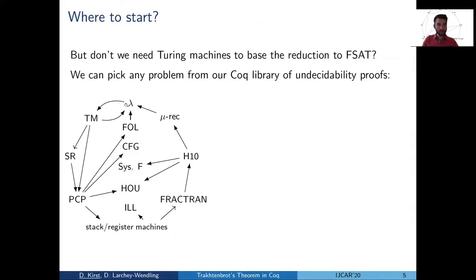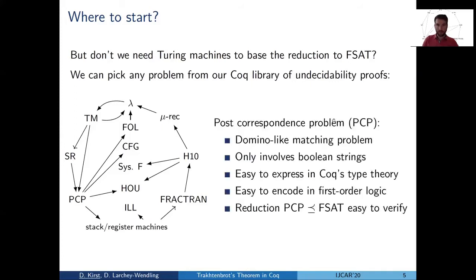A lot of undecidability proofs have been done already. Here's a graph, which is an overview of the problems we have considered. You can also see it in my background. Here we see, for instance, Turing machines, but we also see another problem, PCP. And this problem, the Post Correspondence Problem, is the one we actually start with.